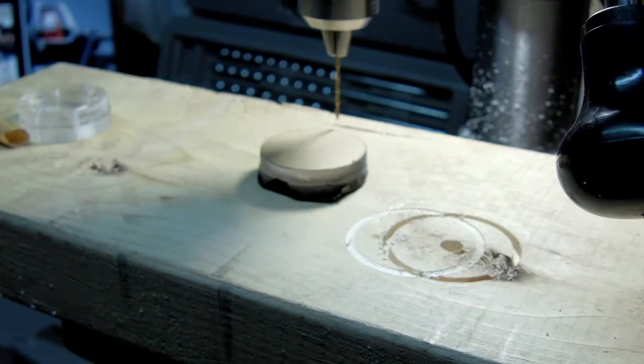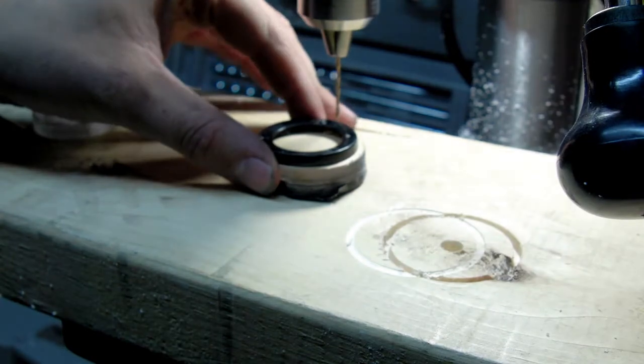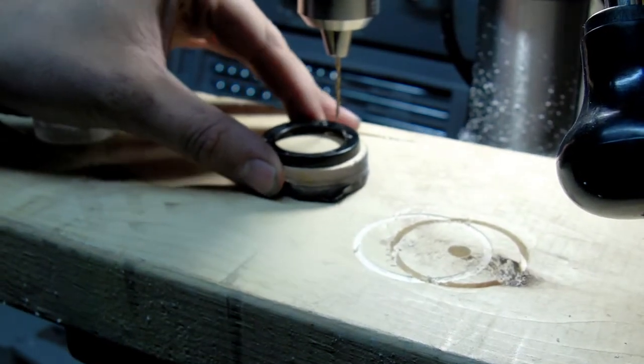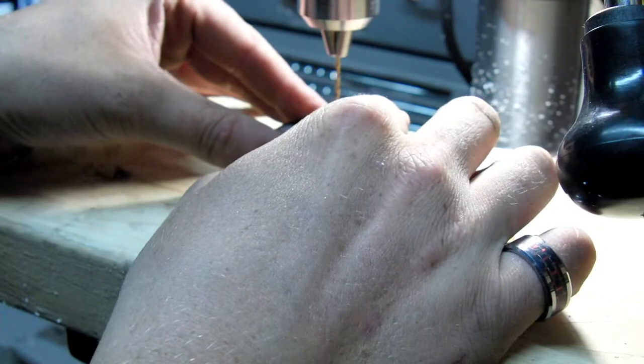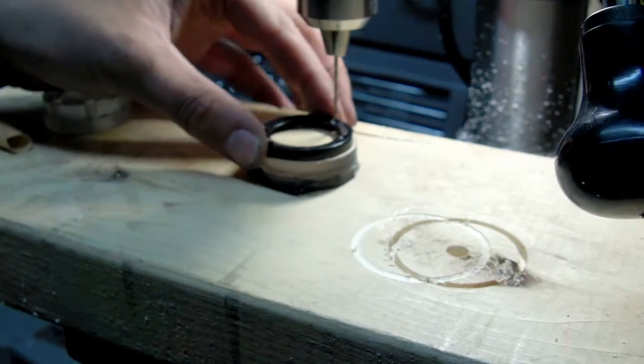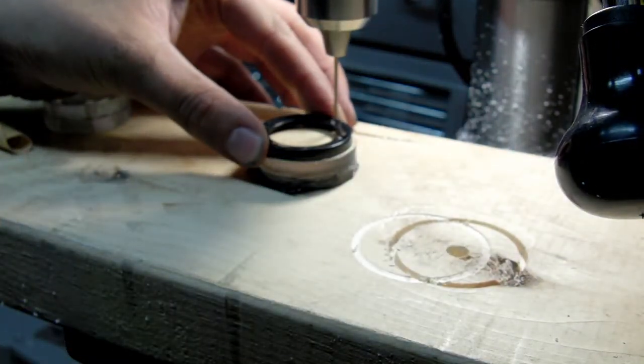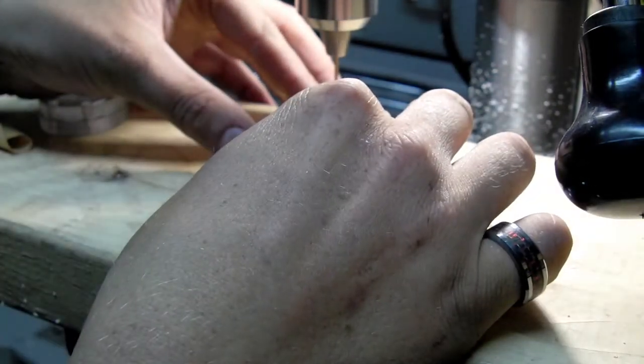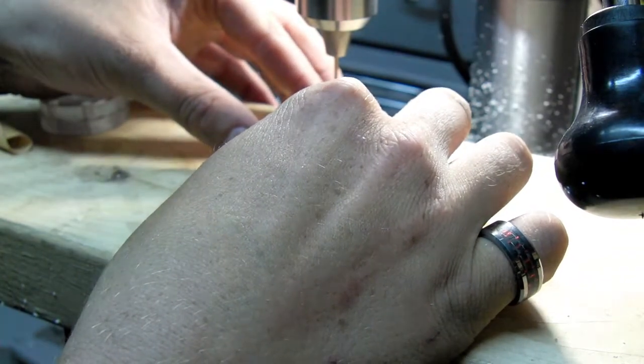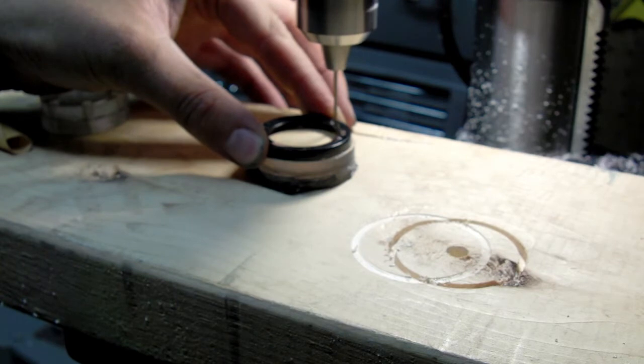Now we're going to use the old GoPro retaining ring to drill pilot holes for the screws that will hold our new lens onto the housing. I used a drill bit just a little bit smaller than the screws that hold the original lens onto the GoPro housing. I'm going to drill one hole on one side and another across from it and use the screws to hold the ring down so that we can drill the remaining four pilot holes.